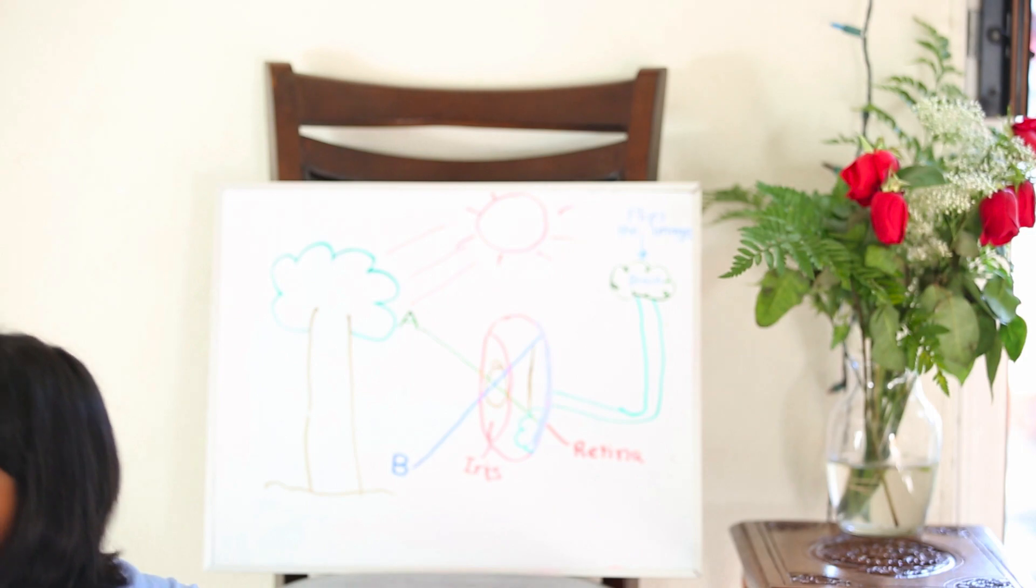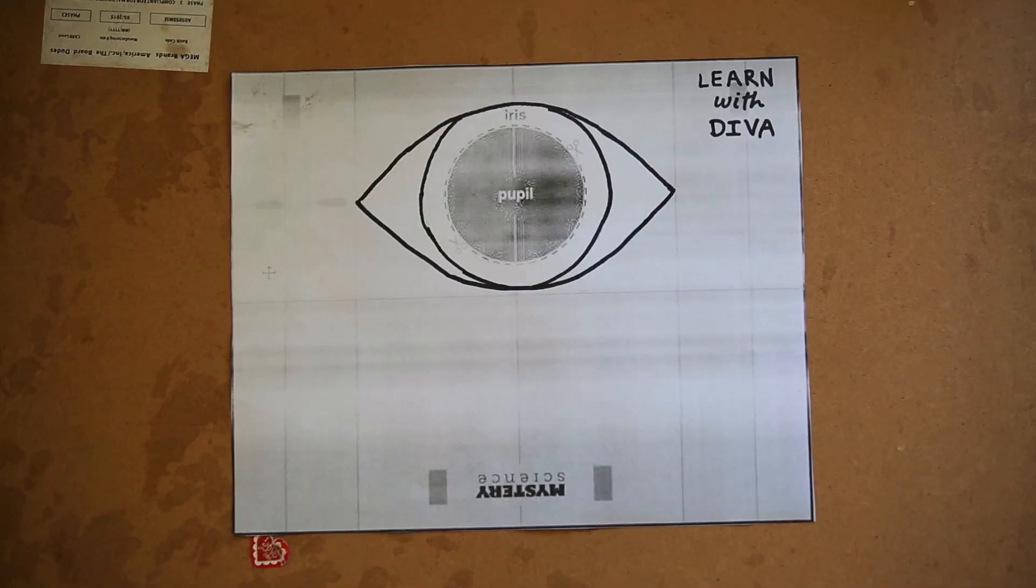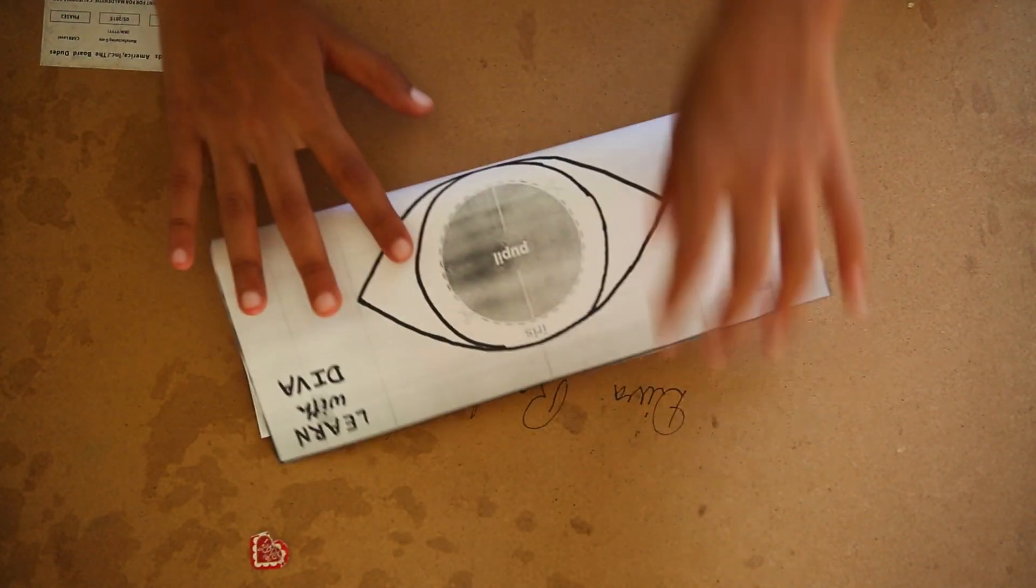So now I'm going to put all this together and make my eye. I'm just going to do a bit of folding and cutting into my eye so it looks realistic.